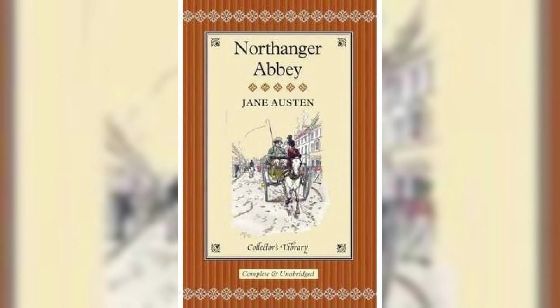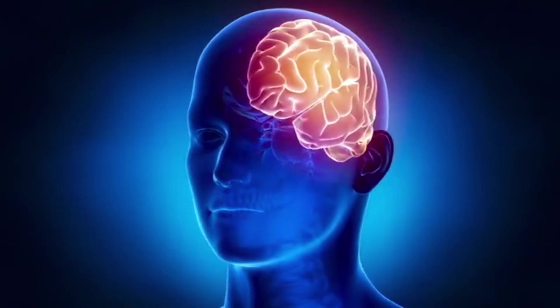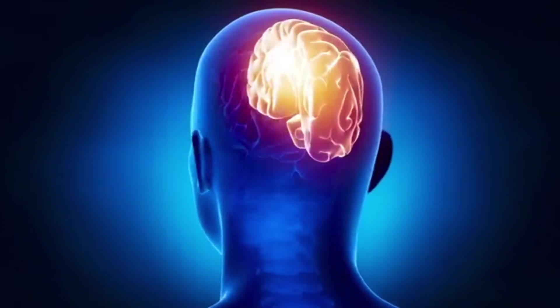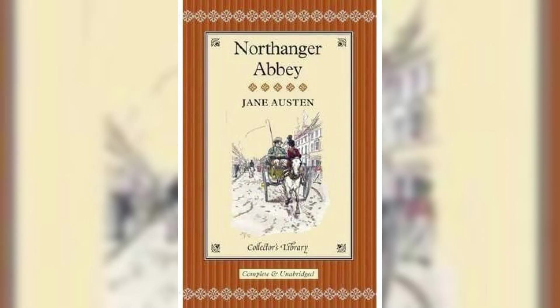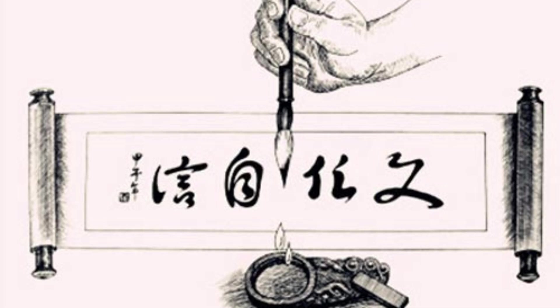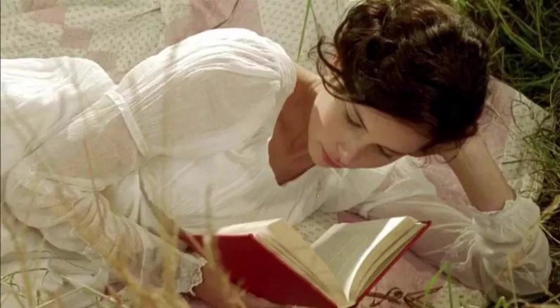All in all, Northanger Abbey is a work with multiple values and meanings, including literary, historical, social, and psychological. Through its in-depth study and analysis, we can better understand the characteristics and changes of English society and literature in the 18th century, and gain insights and inspiration for contemporary society and culture from it. It occupies an important place in the history of 18th century English literature and still has a profound influence and inspiration on contemporary culture and society. Through the study and appreciation of fiction, we can better understand the nature of human nature, society, and the literary arts, and better confront contemporary challenges and problems.